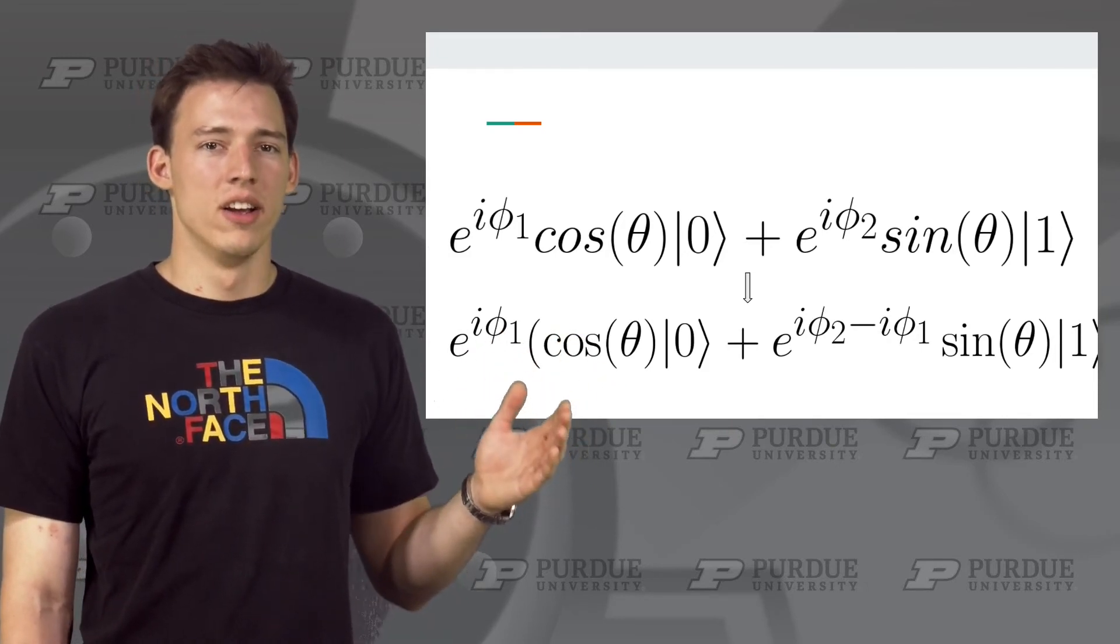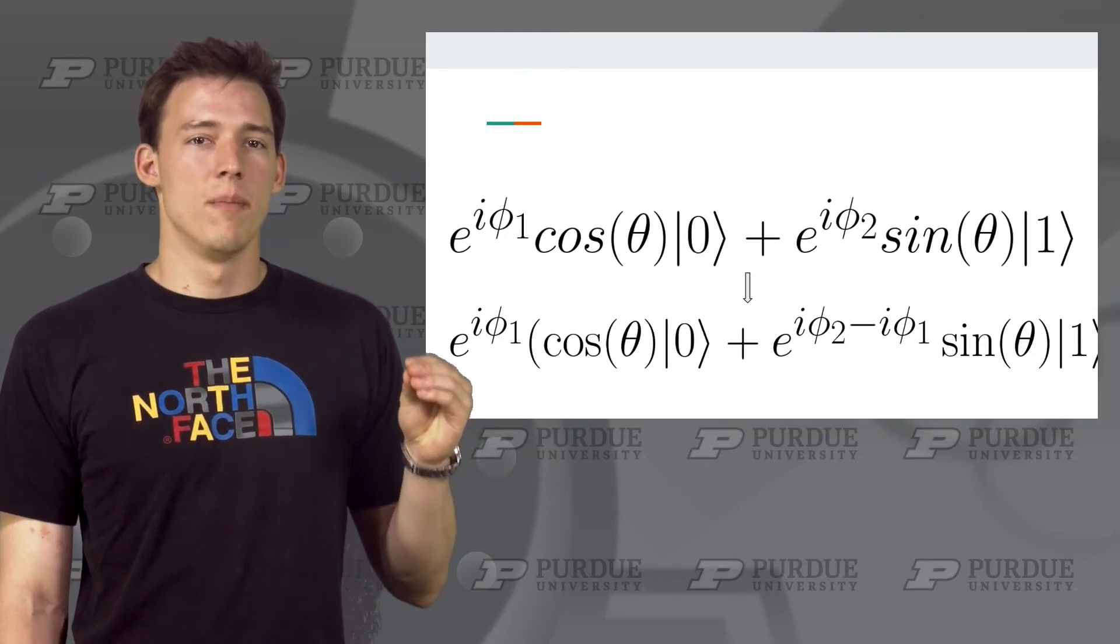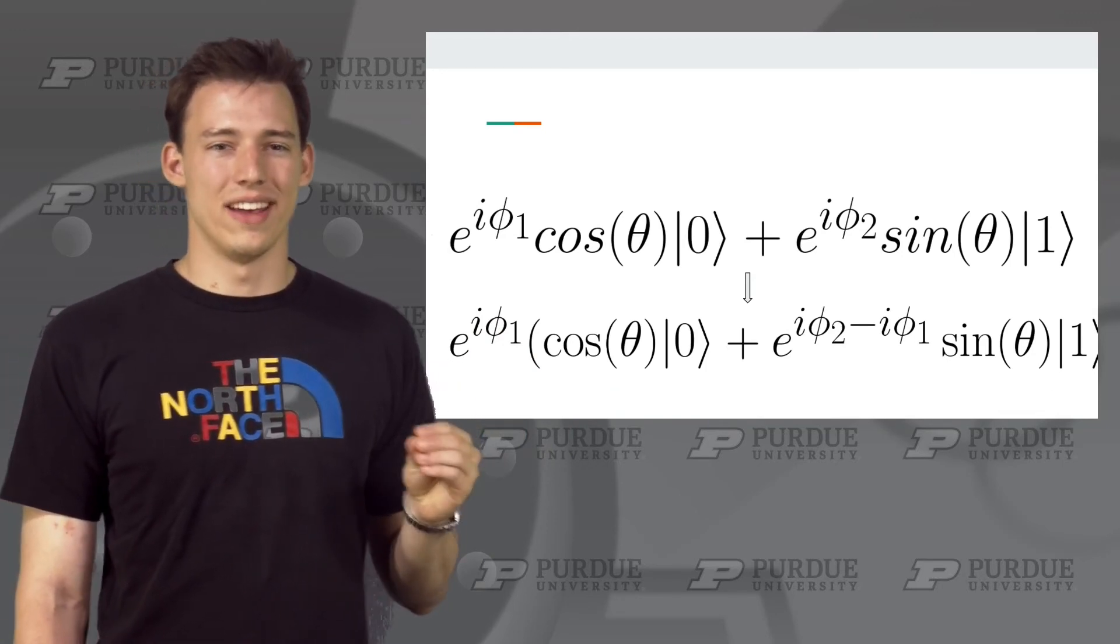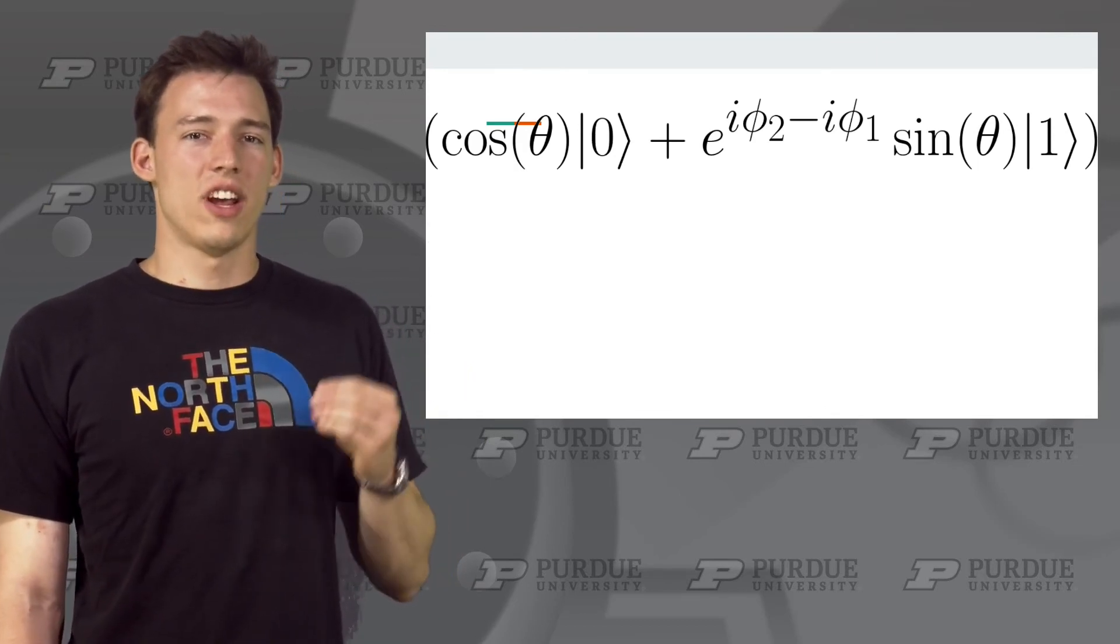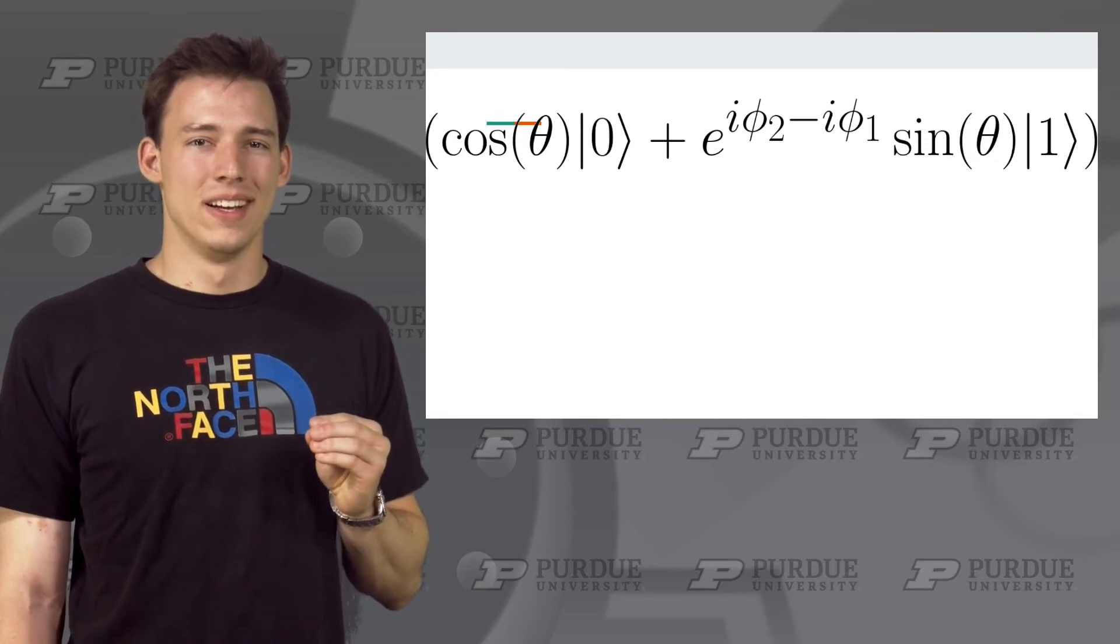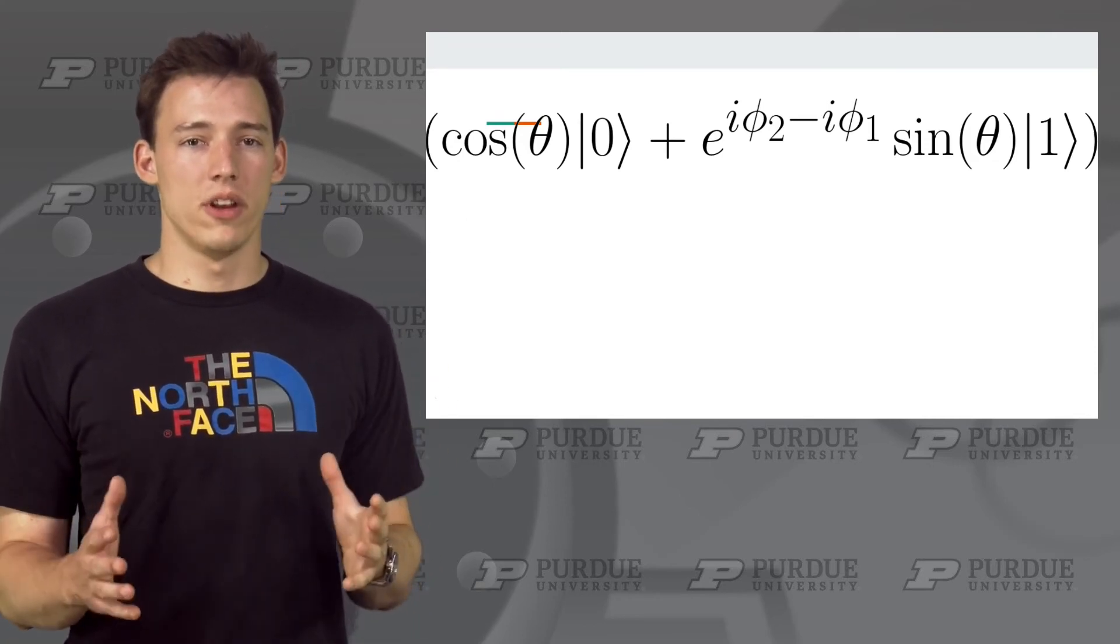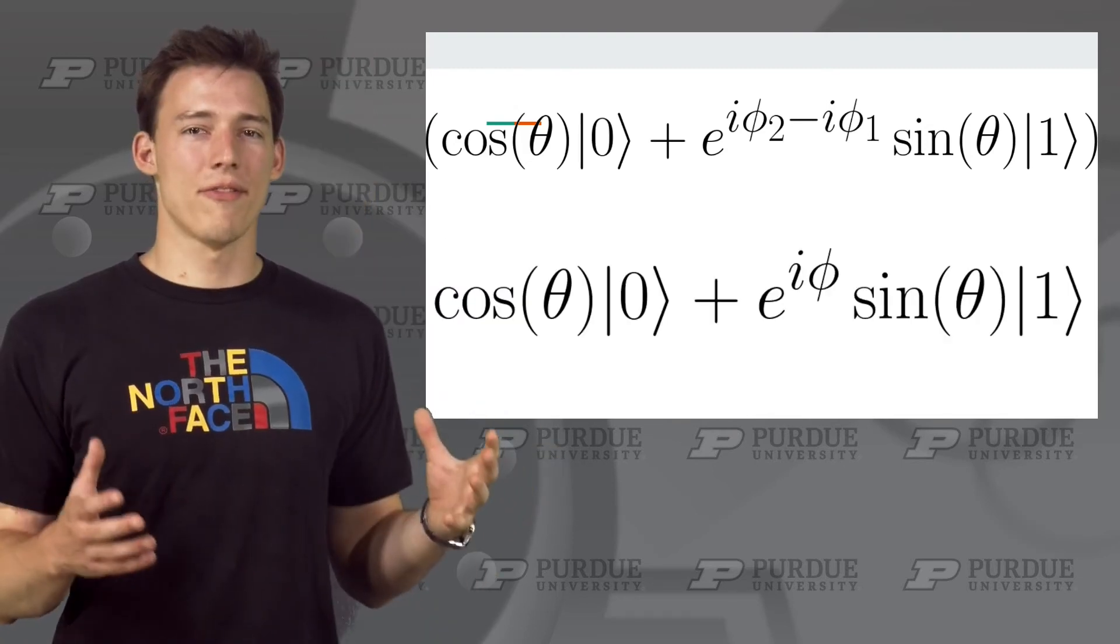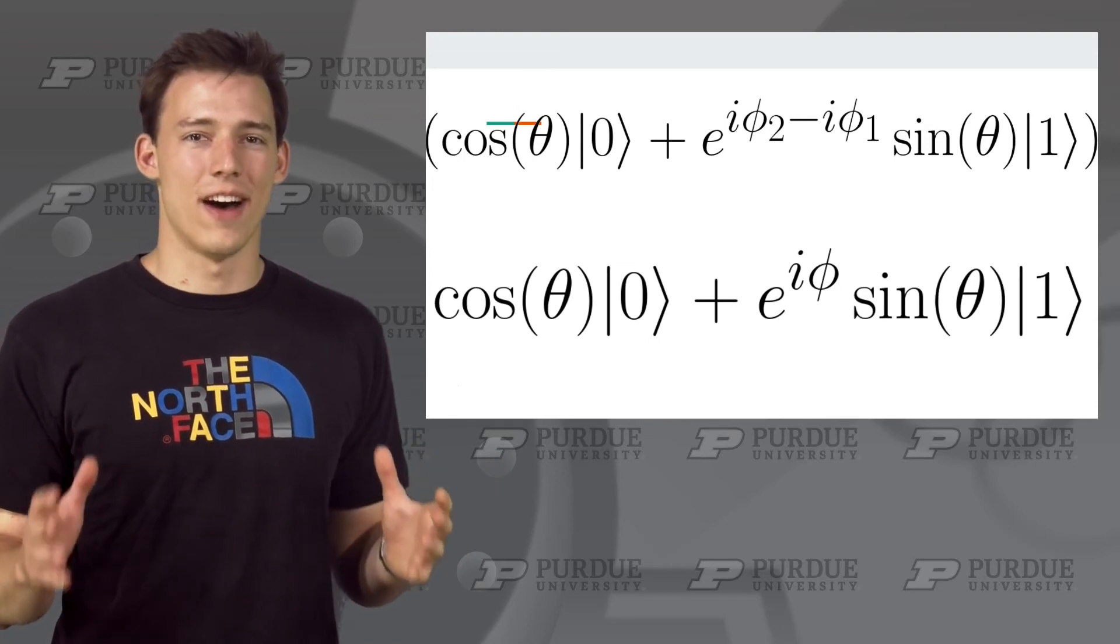Remember, global phase does not matter. So we can actually completely ignore the e to the i phi 1 here because we are multiplying it with the entire state. This means we can now write our new state like this. The last change we can make to this is to realize that we don't care about phi 1 and phi 2. Since in this equation, they just evaluate to some constant, we can replace them with another variable to get this equation. So now we have found a way to write any qubit state in terms of two variables, theta and phi.